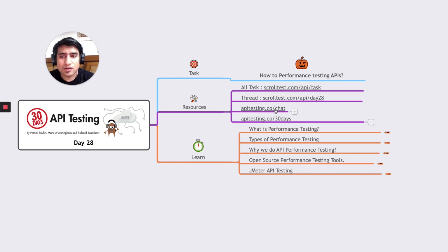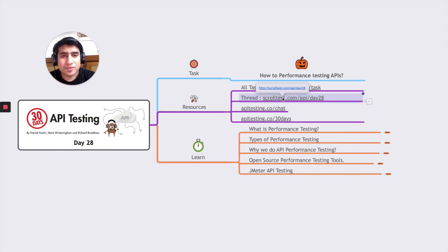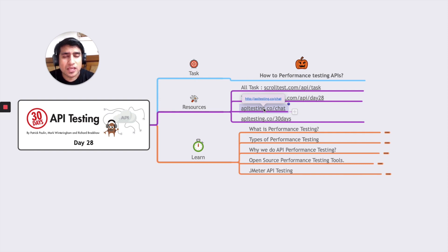If you want to see all the tasks related to the 30 Days API Testing Challenge, I would recommend you go to scrumtage.com/apitest. If you want to check out the thread specifically related to performance API testing, you can check out club.ministryoftesting.com. If you want to connect with me, go to apitesting.co/chat, and if you want to download all the resources, go to apitesting.co/30days. These are the five topics I'm going to cover today, including a practical demo.